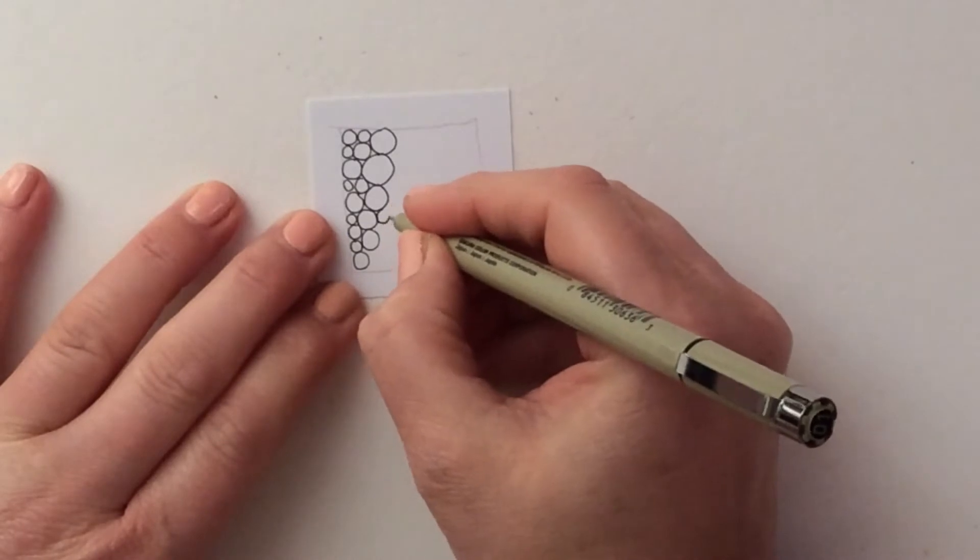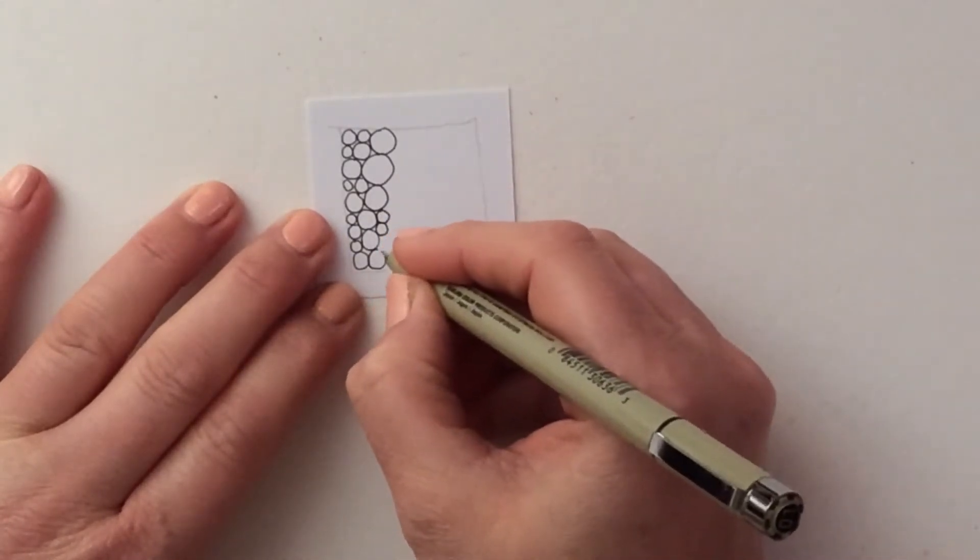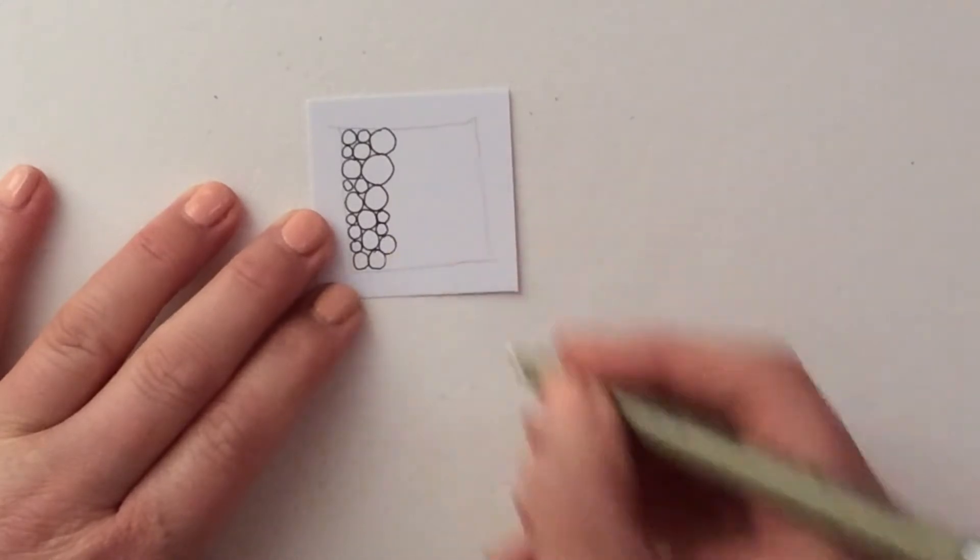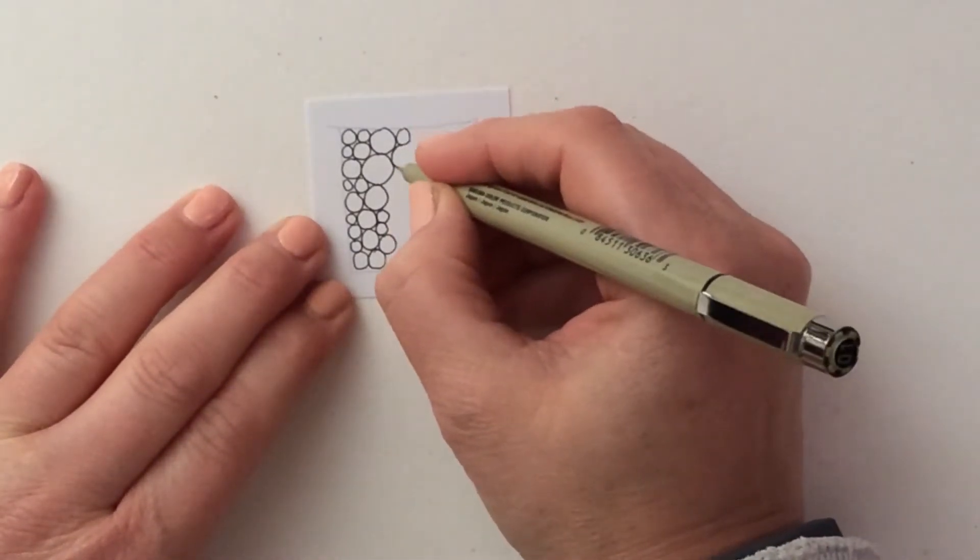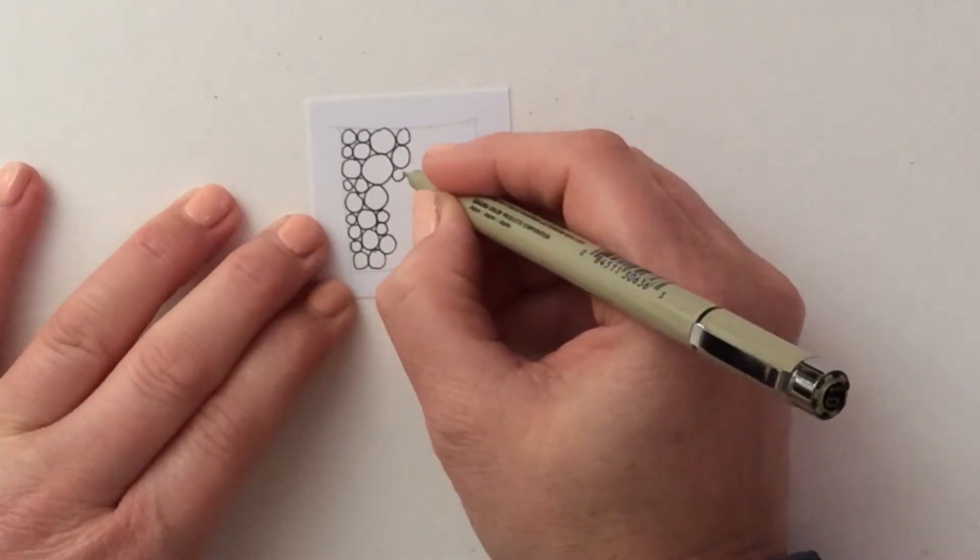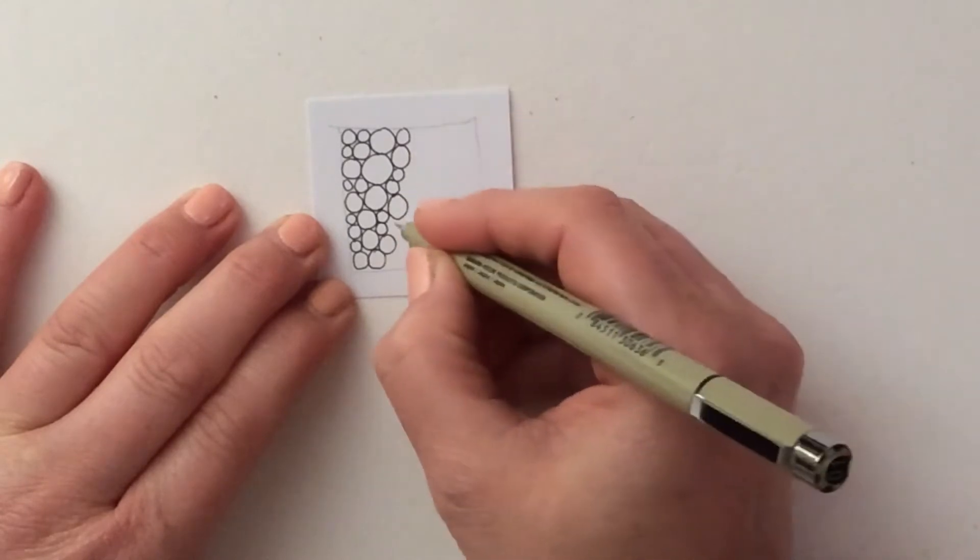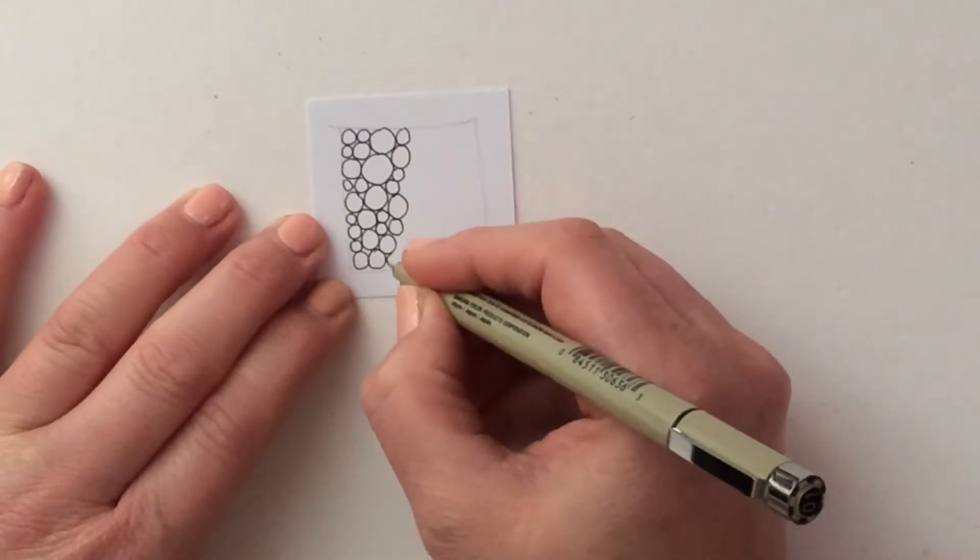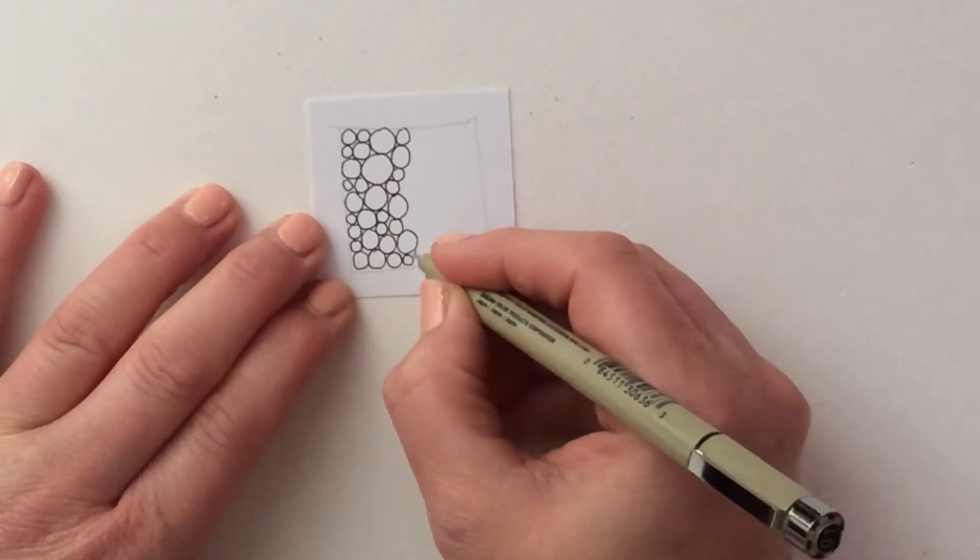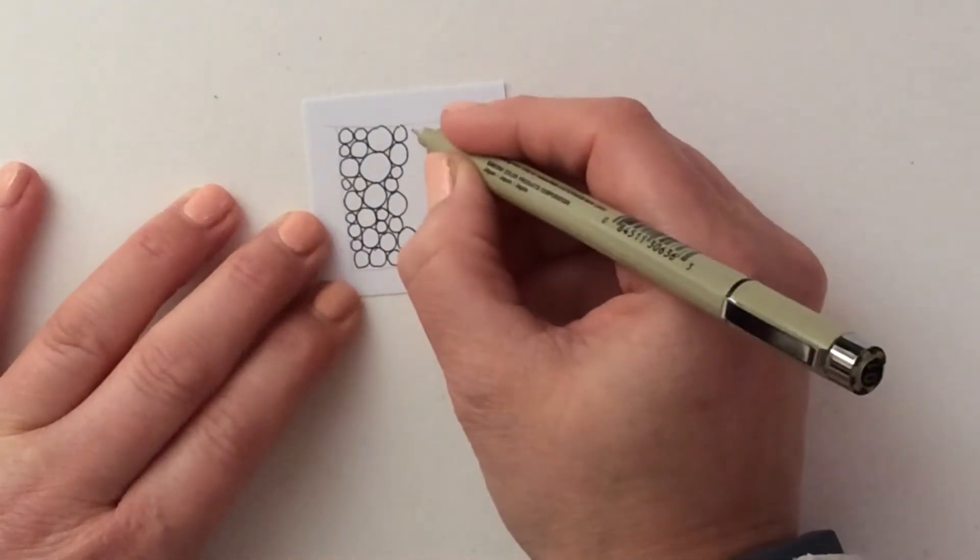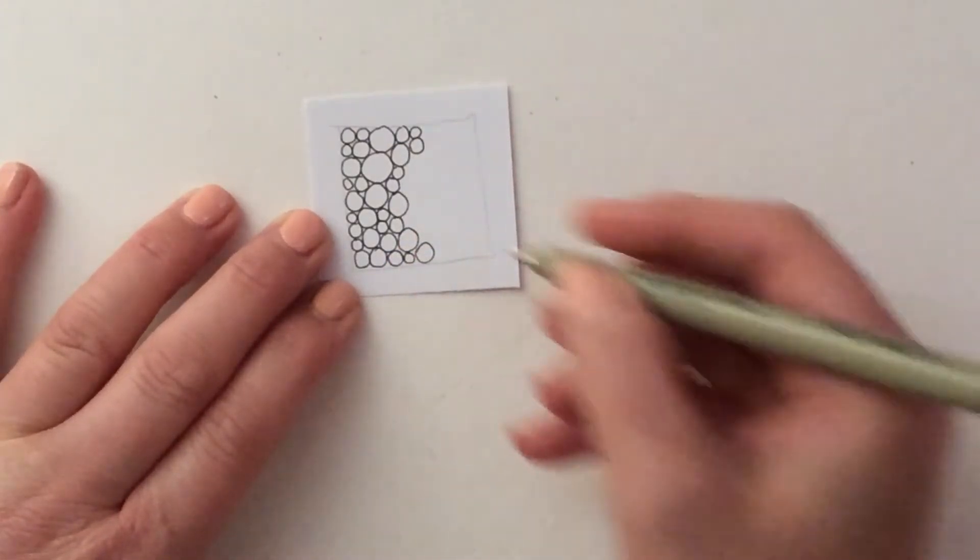And as I'm drawing, I'm concentrating on my breathing, slowing down and making sure that when I draw my circles they are actually circles as opposed to ovals.